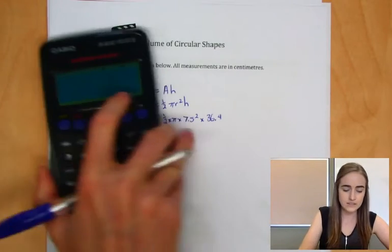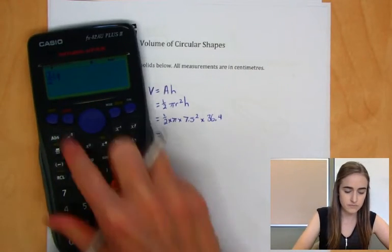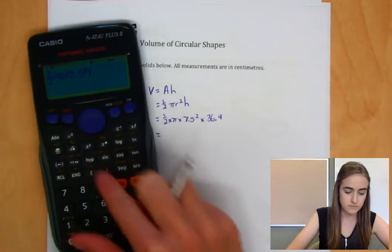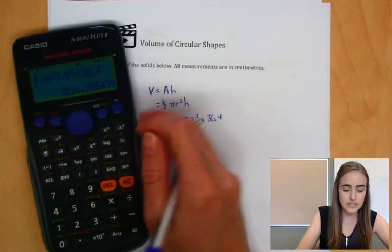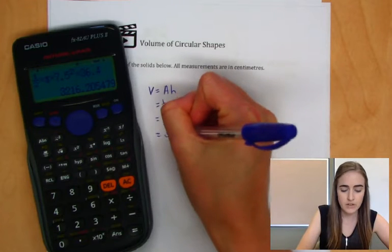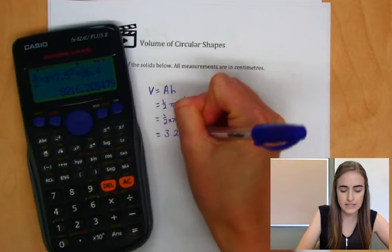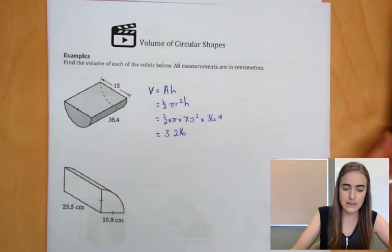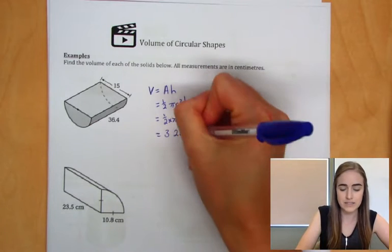Put all of that in our calculator. We'll end up, if we round to the nearest whole number this time, 3,216. And that would be, because everything's in centimeters, that would be centimeters cubed.